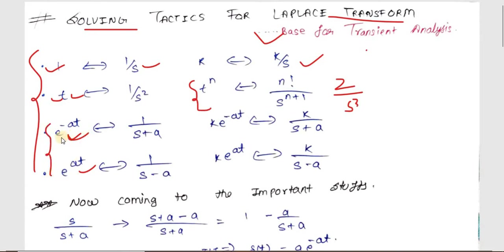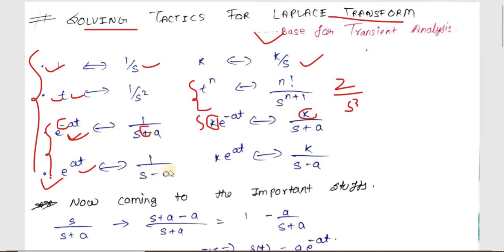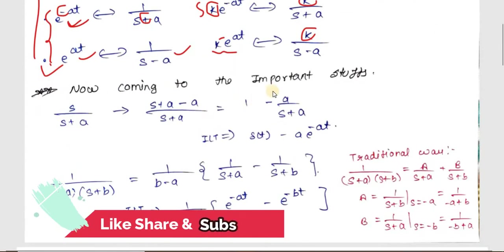If you have a voltage source in the form of exponential — say e^(-at) — the Laplace transform is 1/(s+a). If you have k·e^(-at), the transform is k/(s+a); the constant k is multiplied on both sides. Similarly, for e^(at) the Laplace transform is 1/(s−a), and for k·e^(at) it is k/(s−a). Notice that for e^(-at) you get +a in the denominator, while for e^(at) you get −a.